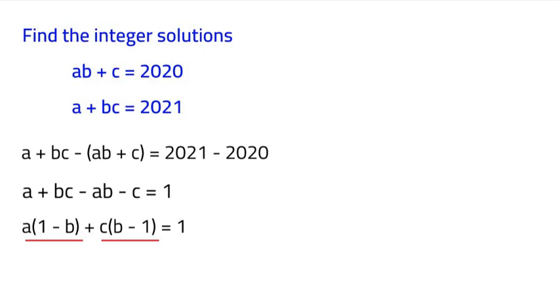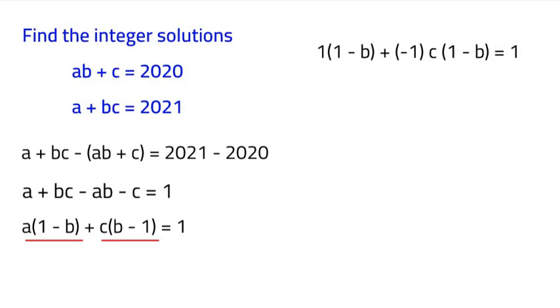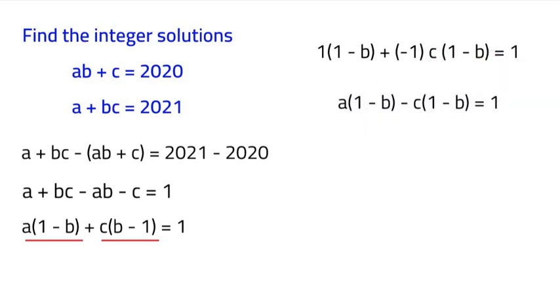We're going to make it so the C times B minus 1 is actually 1 minus B. And how we're going to do that is multiply by a negative 1. If we multiply that B minus 1 by negative 1, we'll have a 1 minus B. And we'll also need to multiply the C by negative 1.